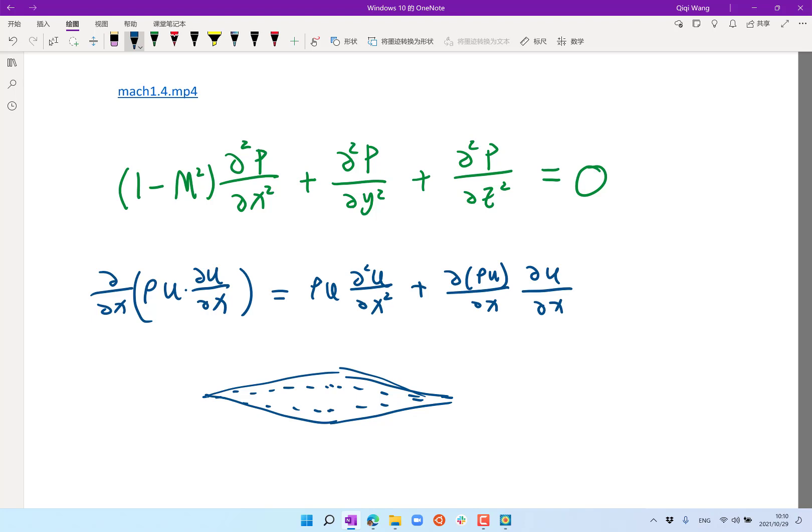ρu stays the same order of magnitude, doesn't change much. The derivative of u with respect to x squared decreases by how much? If I shrink the amount of perturbation by a factor of two... Four? Are you sure? I'm not enlarging the airplane by a factor of two, I'm just decreasing the perturbation to velocity by a factor of two.